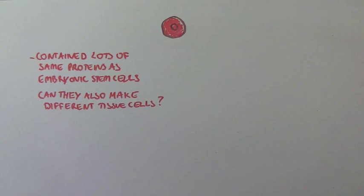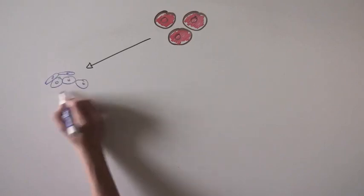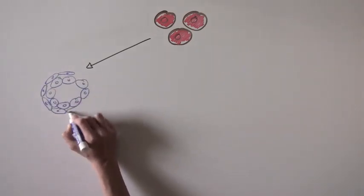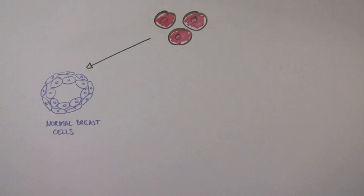So first, the scientists wanted to see if these red cells could produce cells of the breast tissue where they were discovered. And indeed, when a group of red cells were allowed to divide in the presence of very specific conditions, the scientists observed the presence of normal breast cells in a petri dish, including the muscle cells that surround the mammary glands.